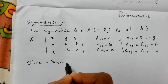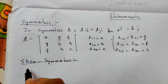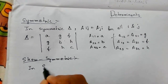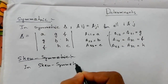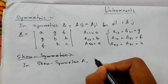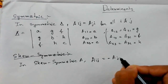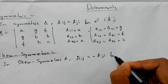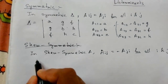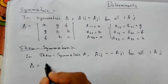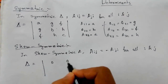Now let us move on to the skew-symmetric determinant. In a skew-symmetric determinant, it is almost the same, just that a of ij is equals to minus of a of ji, for all i and j.